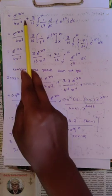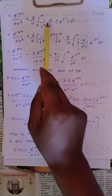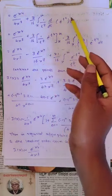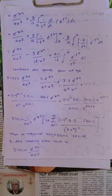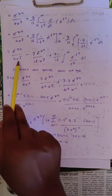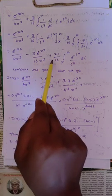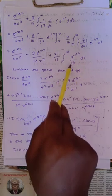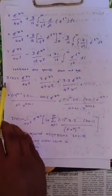This equals e^(-x^4)/(4x³) plus 3/16 times the integral from x to infinity of 1/t^7 times d/dt of e^(-t^4) dt. Simplifying and using integration by parts, continuing this process, we get: e^(-x^4)/(4x³) minus 3·e^(-x^4)/(16x^7) plus 21/16 times the integral from x to infinity of e^(-t^4)/t^8 dt.